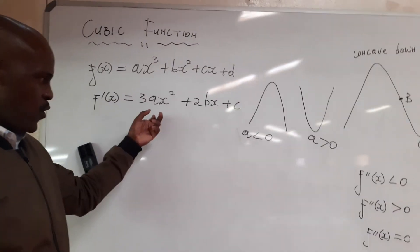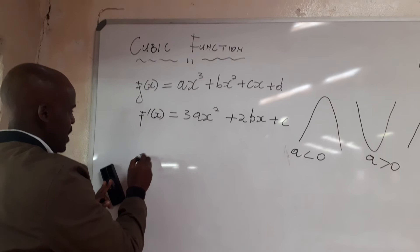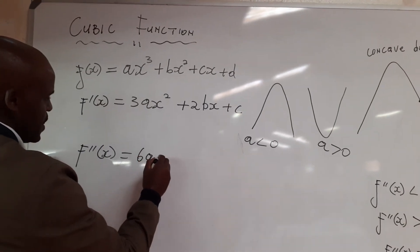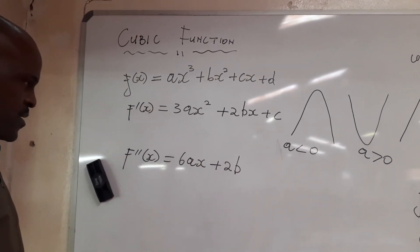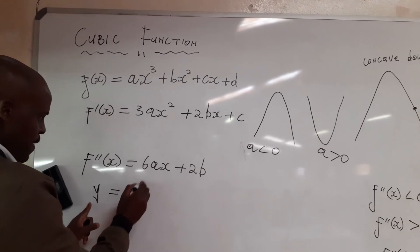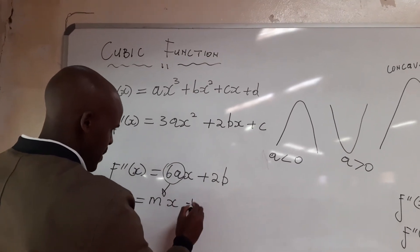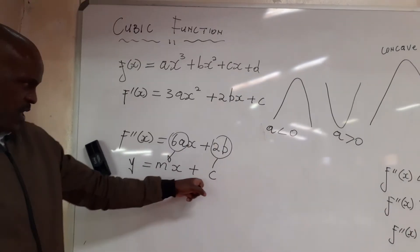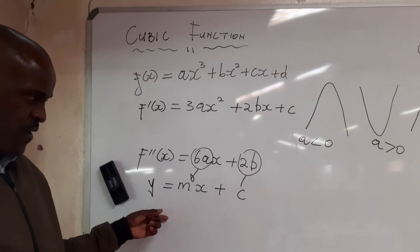The first derivative gives us a quadratic or a parabola. Our second derivative is 6ax + 2b. If you represent the second derivative by y, it is y = mx + c. So the second derivative gives us a straight line.